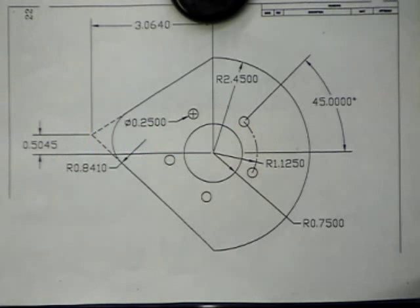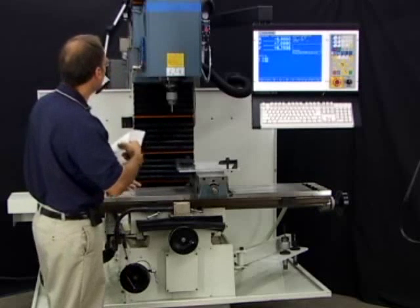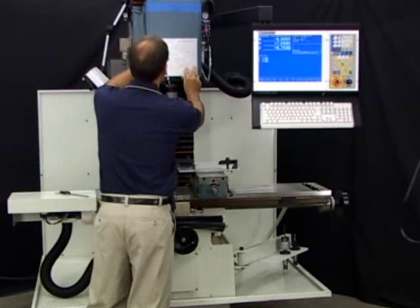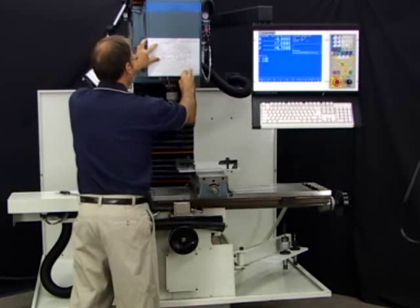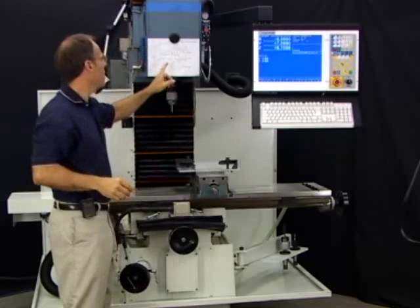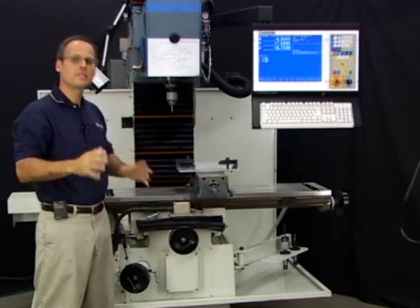Here's the print for the part that we're going to make. Remember, the first step of the process is to determine where on this part are we going to call x, y, z, zero.